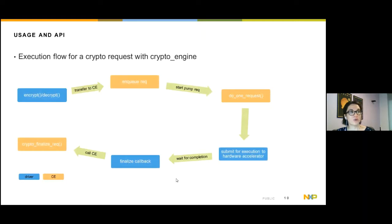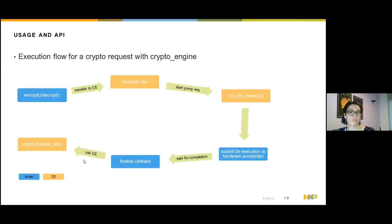This is the execution flow for a crypto request with CryptoEngine. When a driver receives a crypto request via encrypt/decrypt callbacks, we transfer it to CryptoEngine, which adds it to the engine queue. Then, CryptoEngine starts pumping requests by calling the DoOneRequest callback from the driver, which submits the request for execution to the hardware accelerator. We wait for completion, and when one request has finished, the finalized done callback from the driver is called, and we call the crypto finalize request function from the CryptoEngine API.